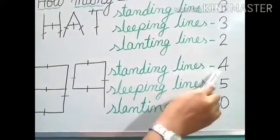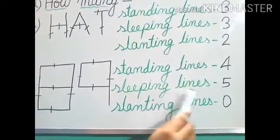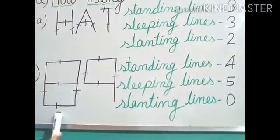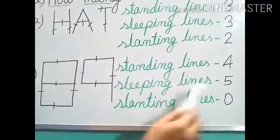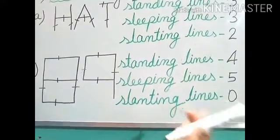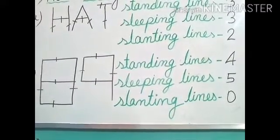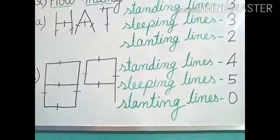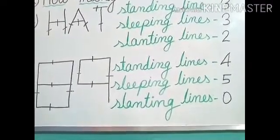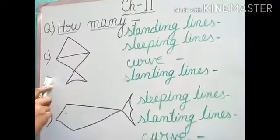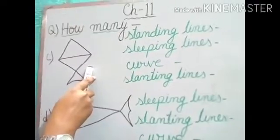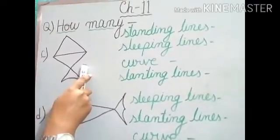So we are going to write: four standing lines, five sleeping lines. And slanting line — no slanting line is there, so we will write zero.